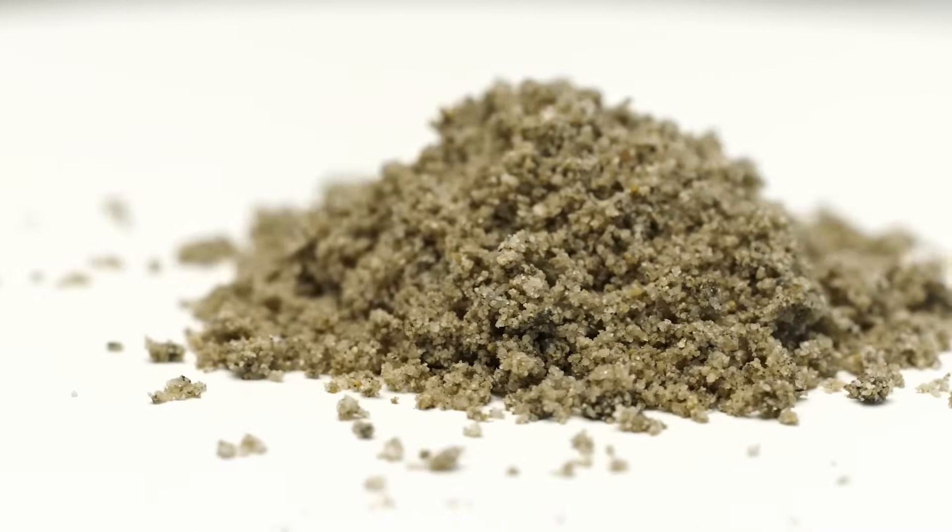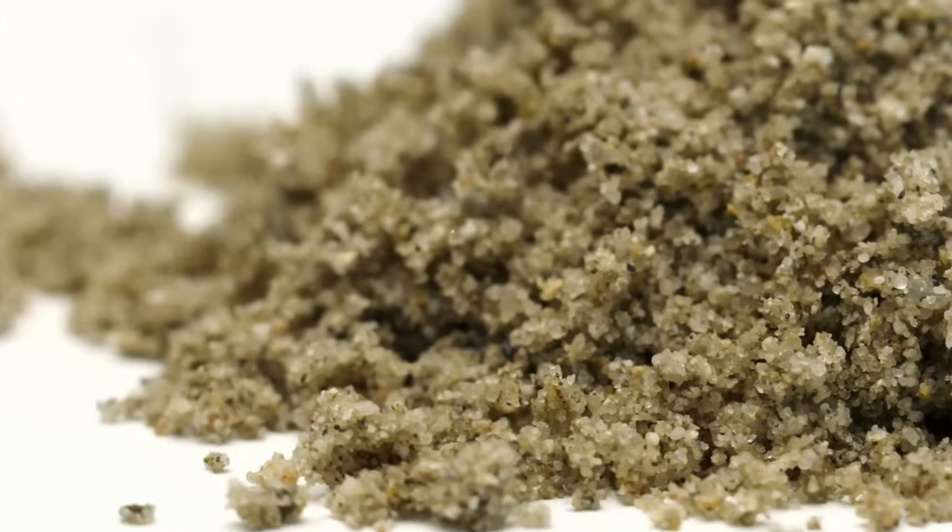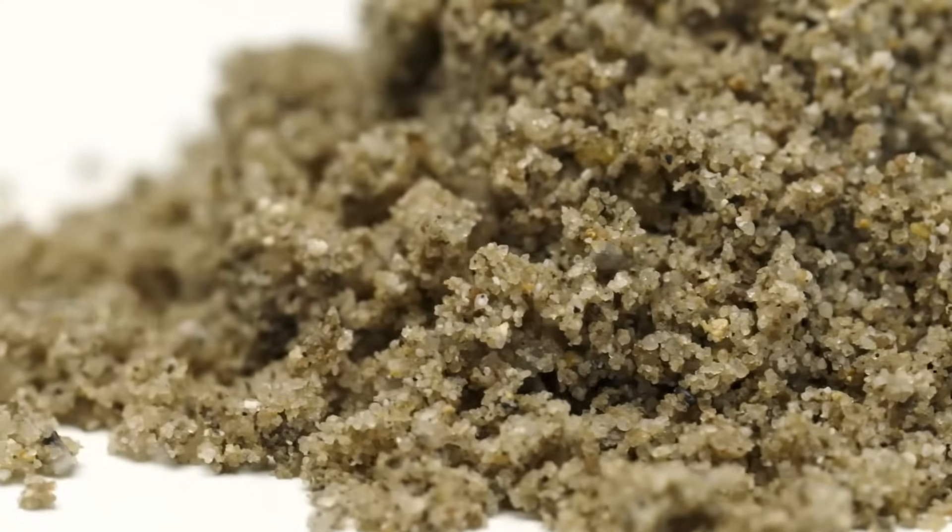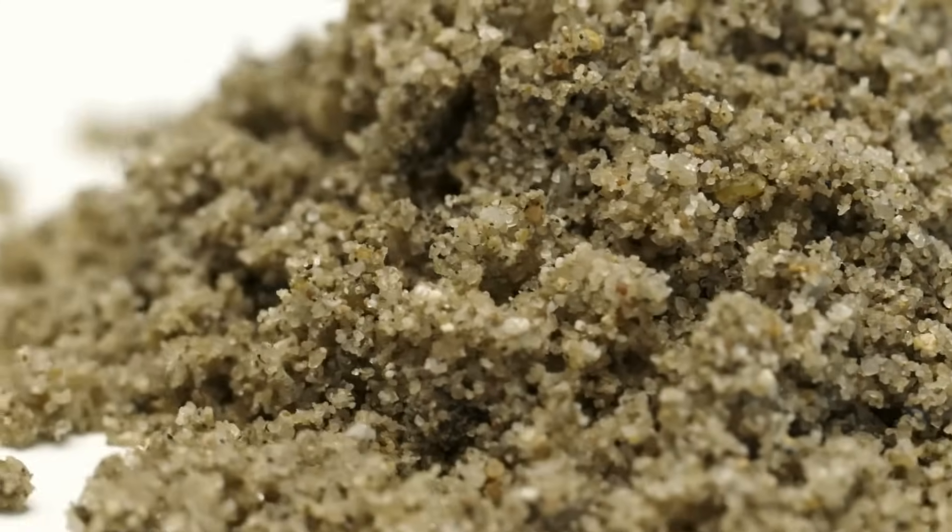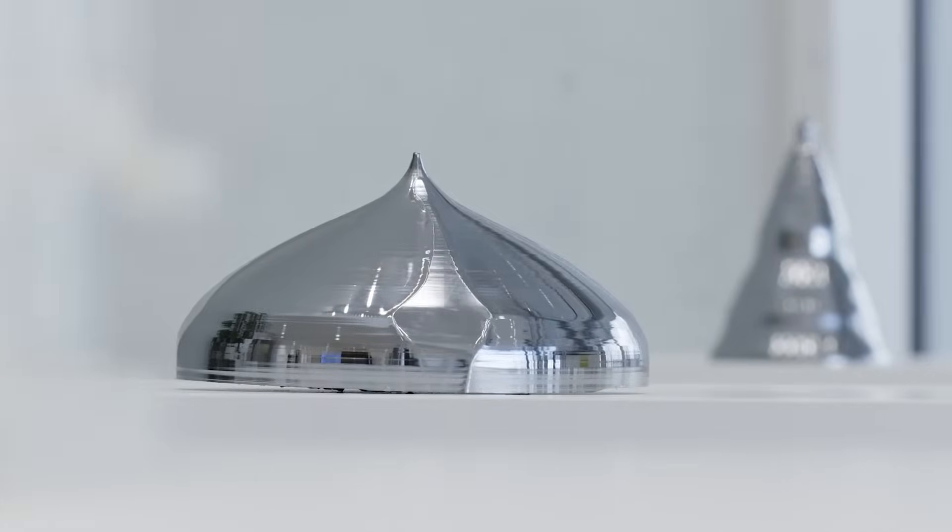Humble sand. This is what the building blocks of the future are made of. But making them is a long process comprising a great many steps. First, the silicon dioxide in the sand has to be converted into pure silicon.